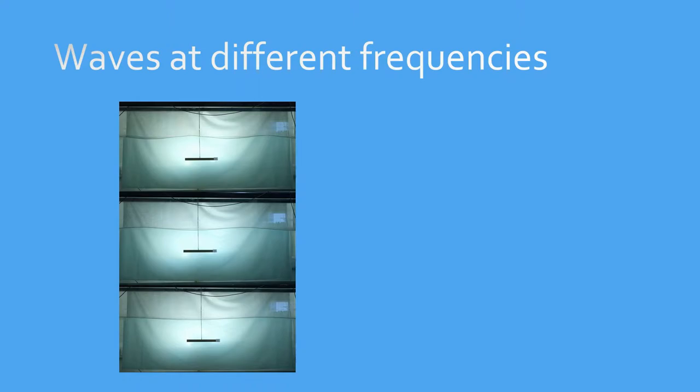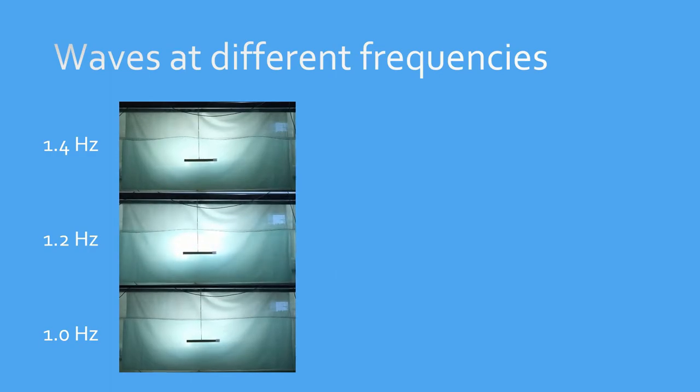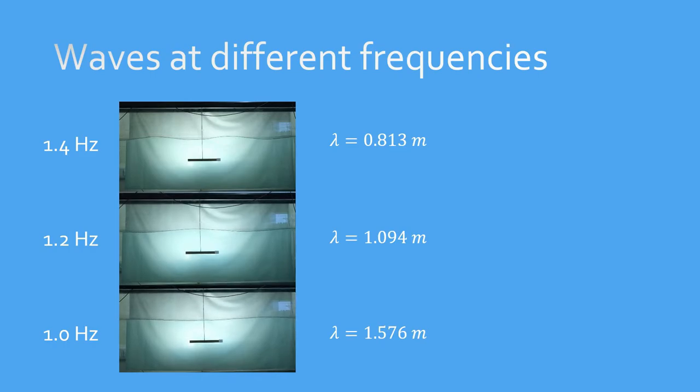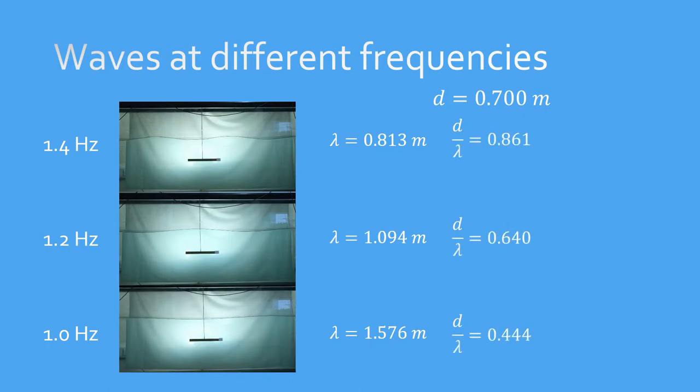Now, let's look at three waves at different frequencies. Starting from the top, we have 1.4 Hz, then 1.2 Hz, and finally 1 Hz. Using the same method of calculating wavelength previously, we get these values. The depth of water remains 0.7 m, so the ratio of depth to wavelength are as shown. From there, we worked out the celerity for each wave. As you can see, the longer the wavelength, the faster the wave propagates. Watch the videos again and see if you can spot the difference in the speed of waveform propagation.